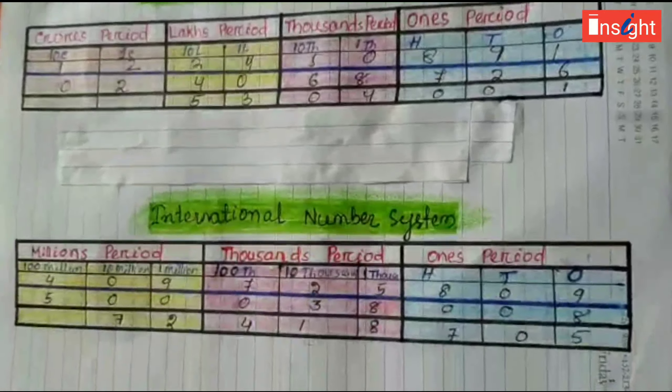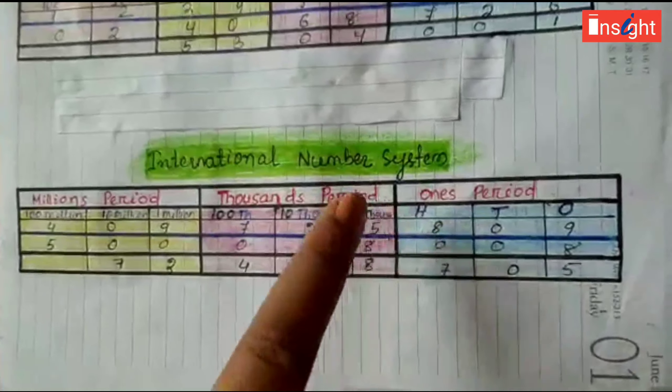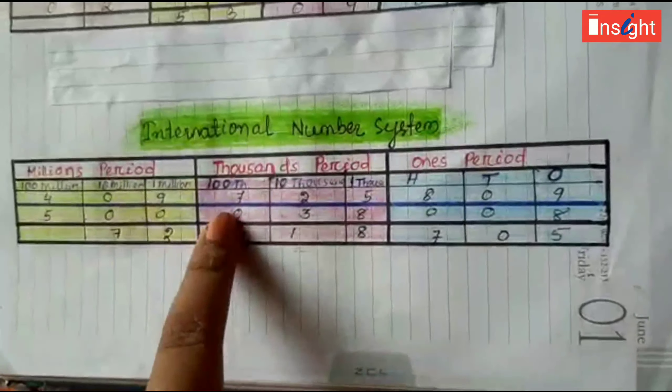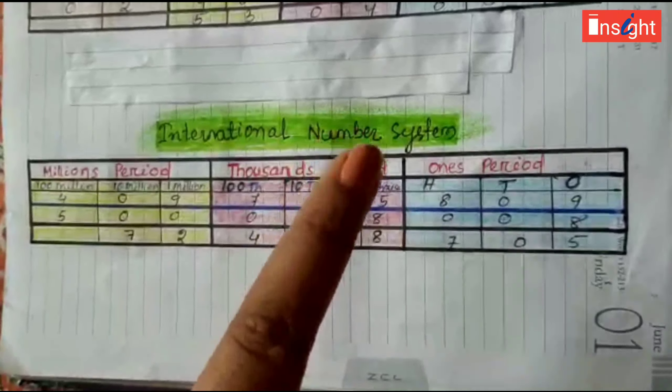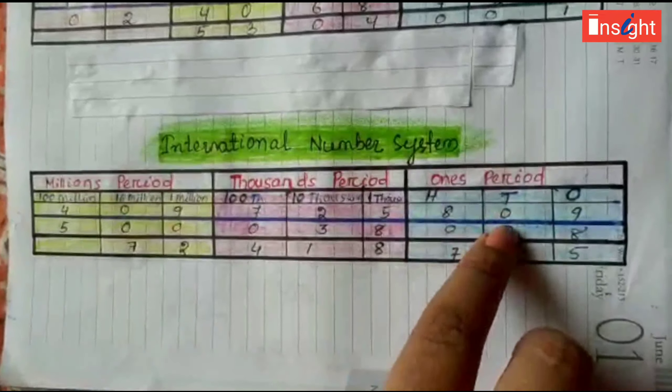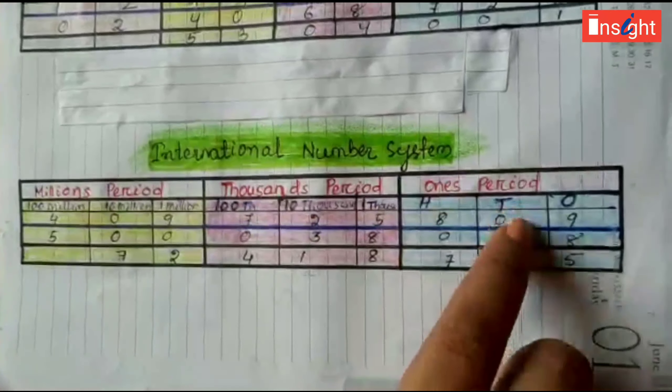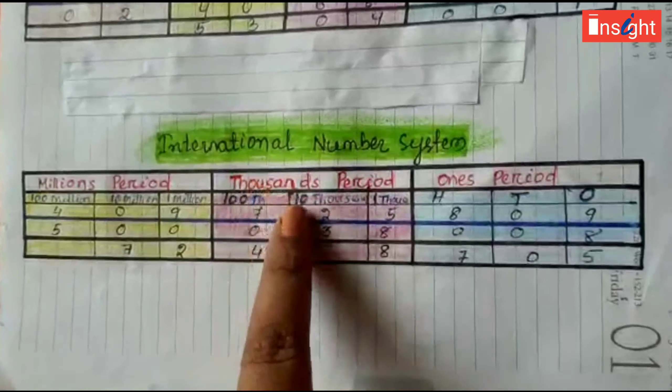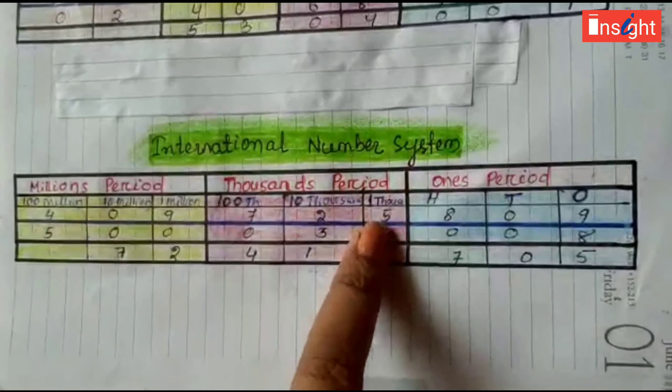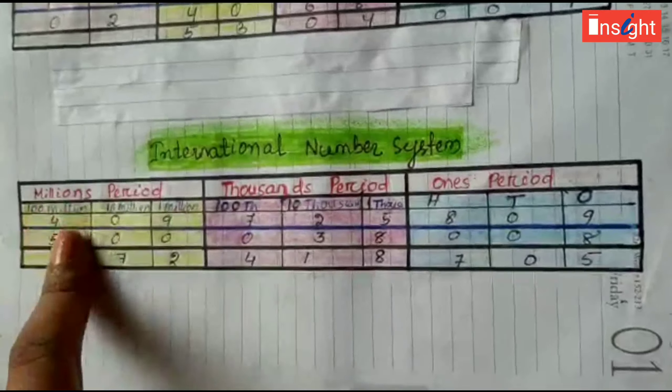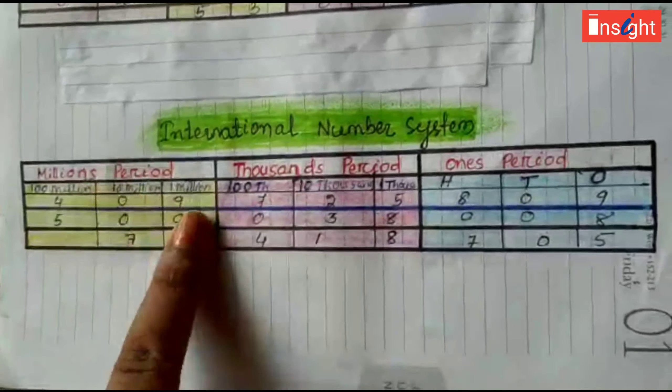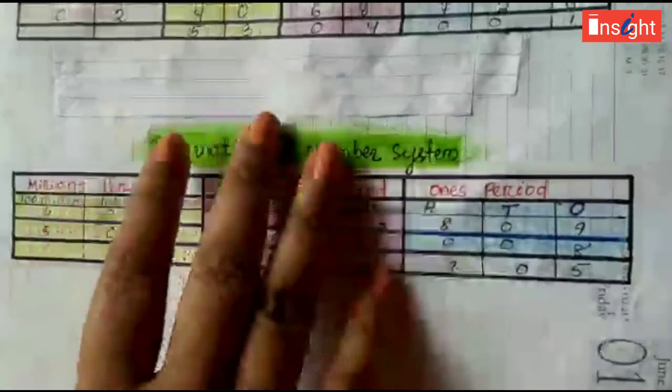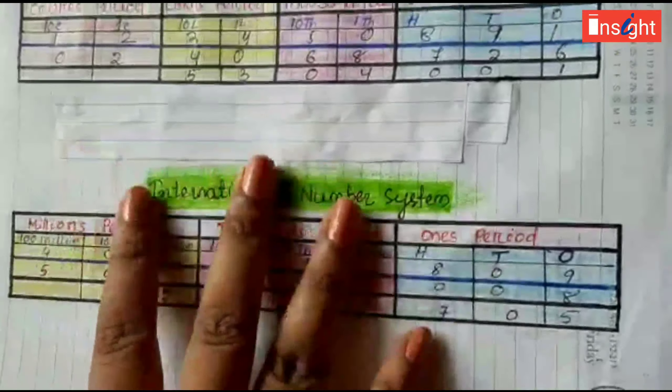Come to International number system again. All the categories are divided into three subcategories each. Once period: hundred, tens, ones. Thousand period: hundred thousand, ten thousand and one thousand. Millions period: hundred million, ten million and one million. Let's take some examples of both number systems to clear more.